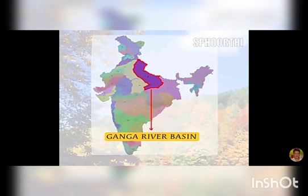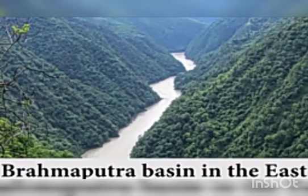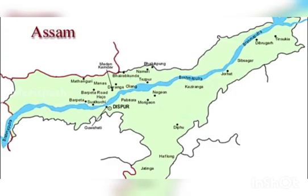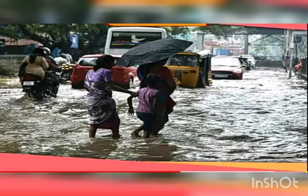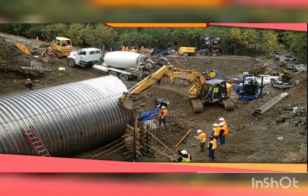The last basin is the Brahmaputra river basin, which lies in the eastern part of the northern plains. The Brahmaputra river rises in Tibet, where it is called Tsangpo. It then enters India through Arunachal Pradesh and flows through narrow valleys through Assam. This region gets heavy rainfall, and because of that, river Brahmaputra sometimes causes floods. This basin is also rich in minerals.